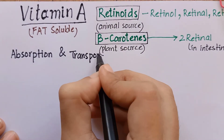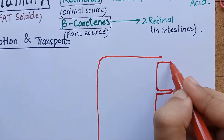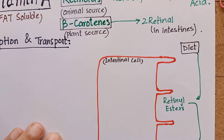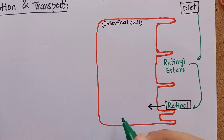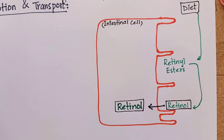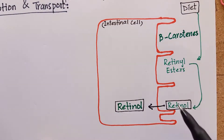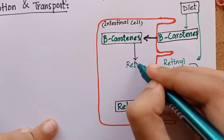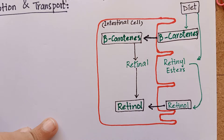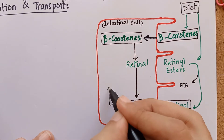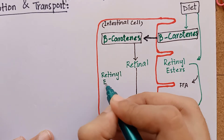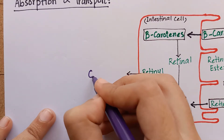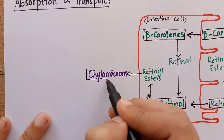Now coming to the absorption and transport of vitamin A. Compounds of vitamin A like retinol esters that we consume in our diet are hydrolyzed into retinol by intestinal brush borders, releasing free fatty acids. Beta carotene is absorbed as it is and hydrolyzed inside the intestinal cells, releasing retinol. Retinol is then re-esterified to long chain fatty acids inside the intestinal mucosa, and these retinol esters are secreted into the lymphatic system as a component of chylomicrons.